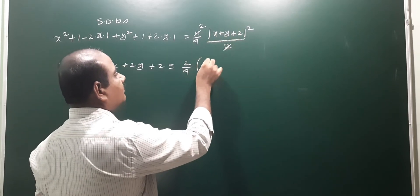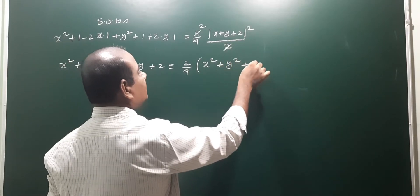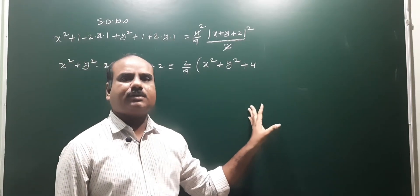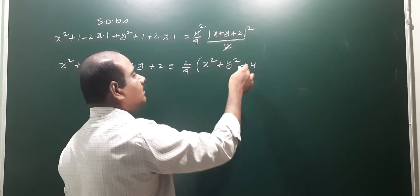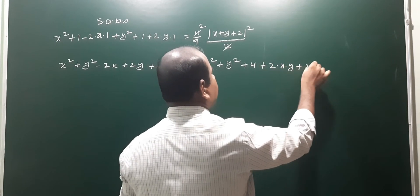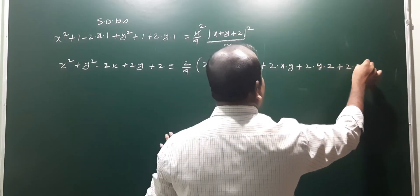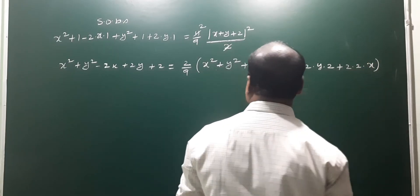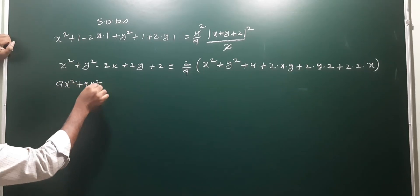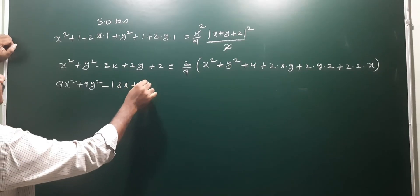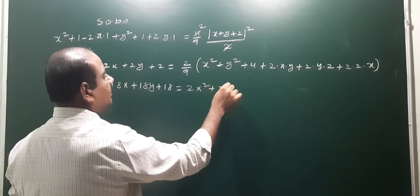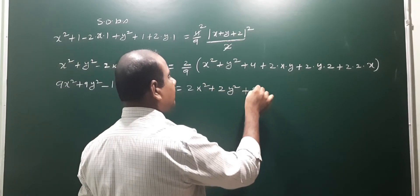Expanding (x + y + 2)² using the (a + b + c)² formula: x² + y² + 4 + 2xy + 4y + 4x. Multiplying left side by 9: 9x² + 9y² - 18x + 18y + 18. Multiplying right side by 9 then 2: 2x² + 2y² + 8 + 4xy + 8y + 8x.